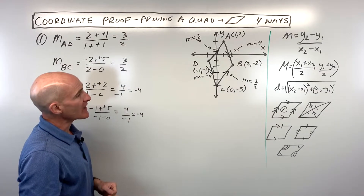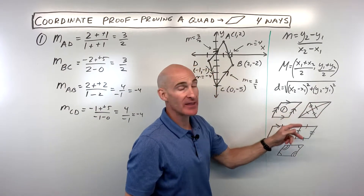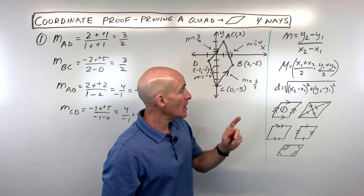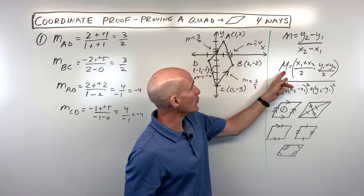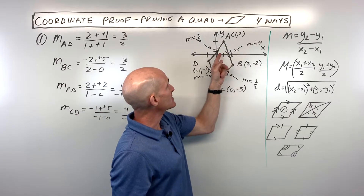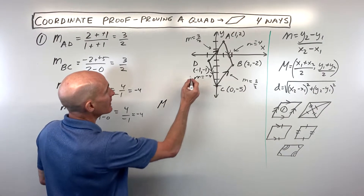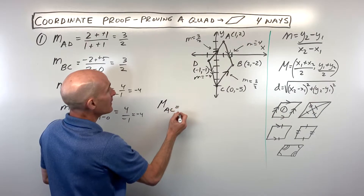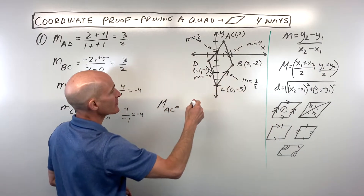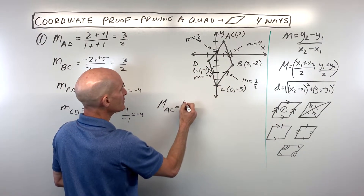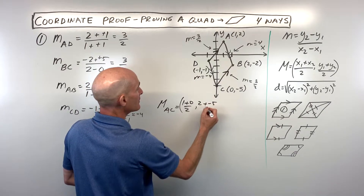For example number two, let's prove it's a parallelogram by showing the diagonals bisect each other — meaning they cut each other in half, passing through each other's midpoint. We'll use the midpoint formula. The midpoint of AC is found by adding the x-coordinates and dividing by 2, and adding the y-coordinates and dividing by 2: (1 plus 0) over 2 and (2 plus negative 5) over 2.